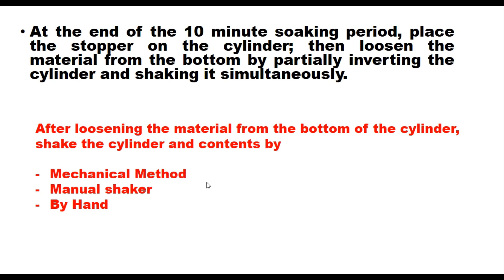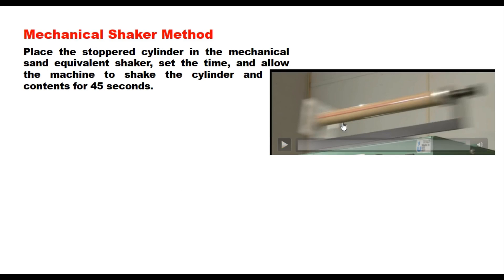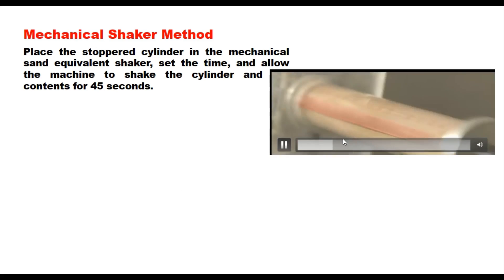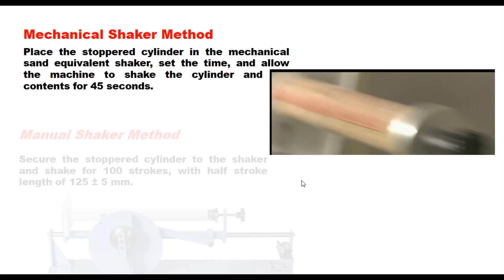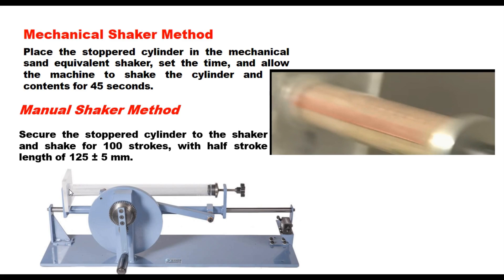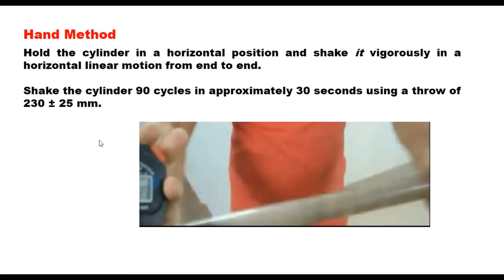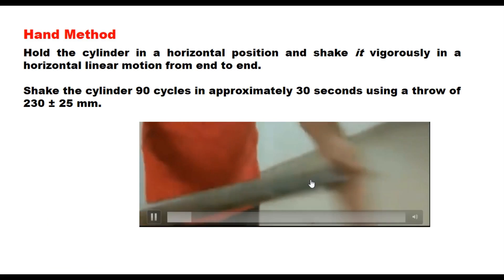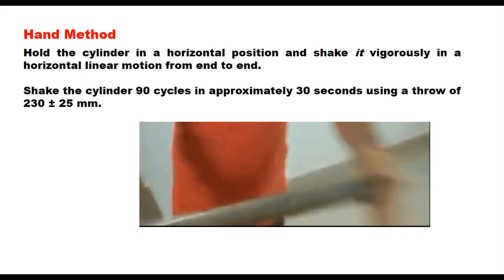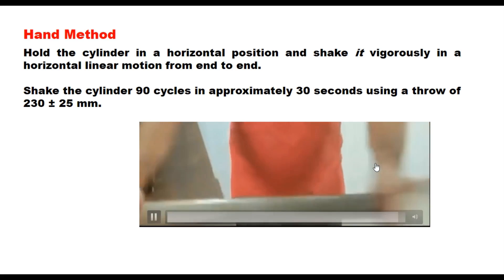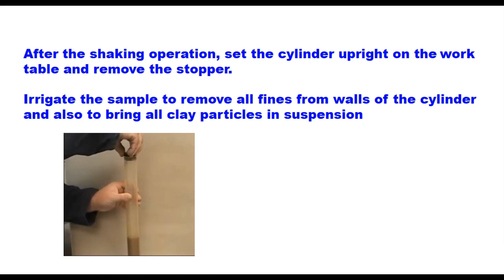After loosening the material, shake the cylinder and contents by one of three methods. For the mechanical method, place the stoppered cylinder on the mechanical sand equivalent shaker and shake for 45 seconds. For the manual shaker method, secure the cylinder and shake for 100 strokes with a half stroke length of 125 ± 5 mm. For the hand method, hold the cylinder horizontally and shake vigorously in a linear motion — 90 cycles in approximately 30 seconds using a throw of 230 ± 25 mm.